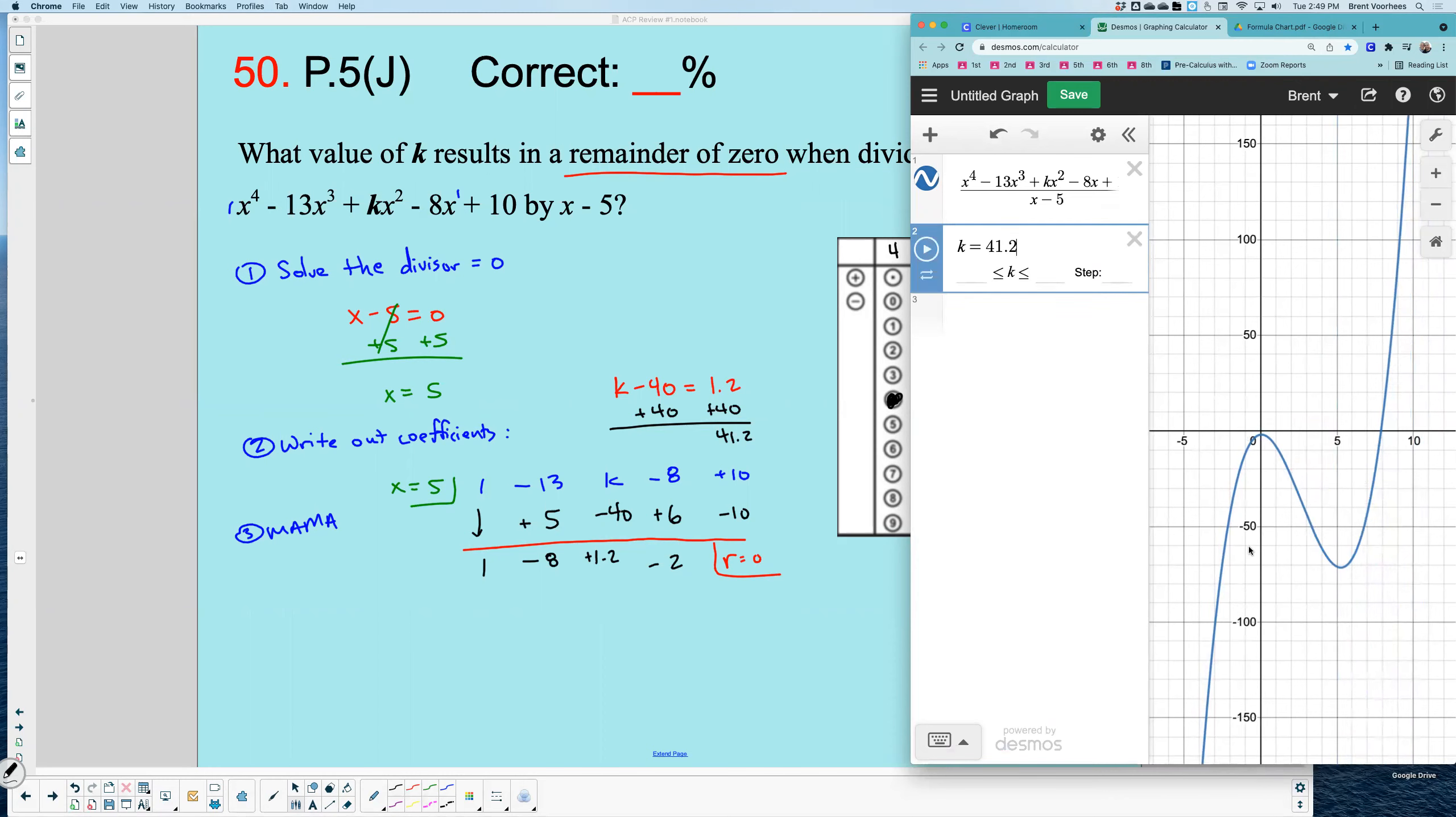the piece snaps together because the graph has now only a removable discontinuity right there because they could cancel out. So my k value would be 41.2.